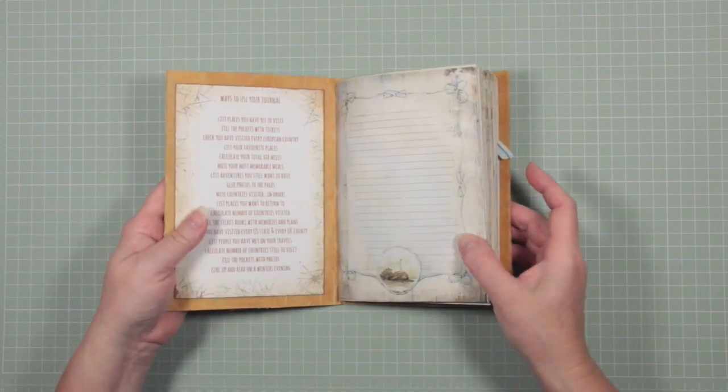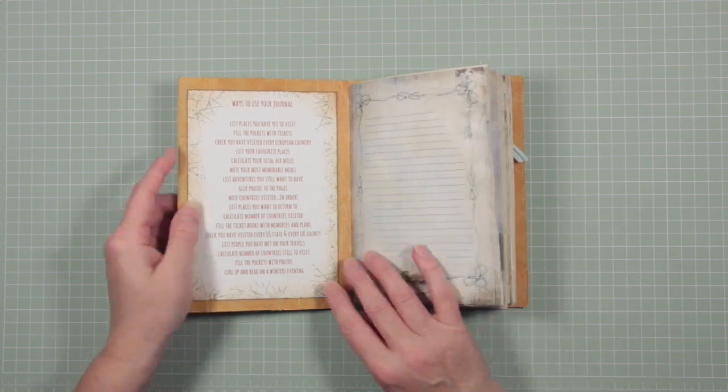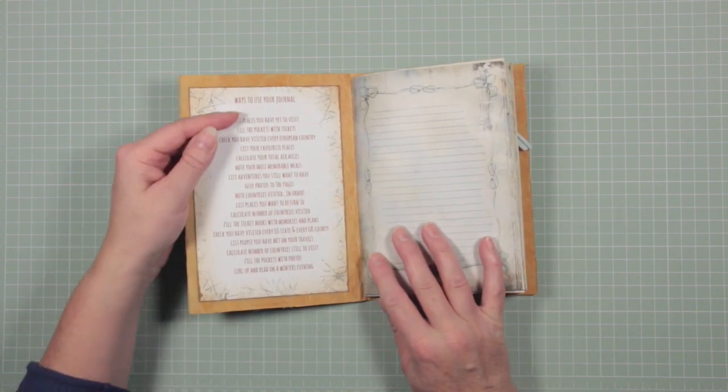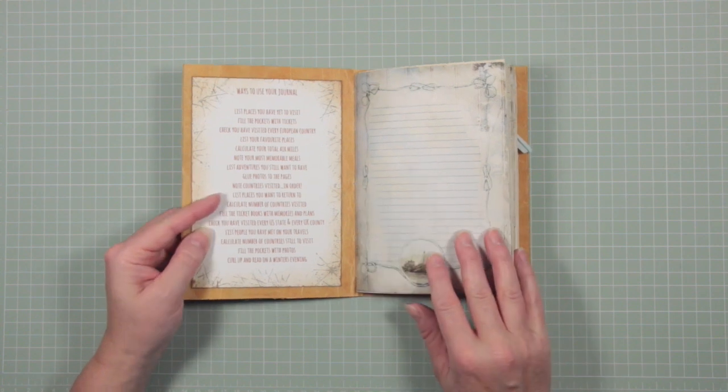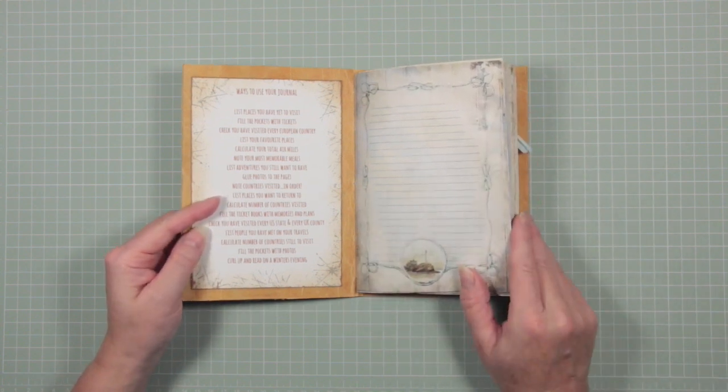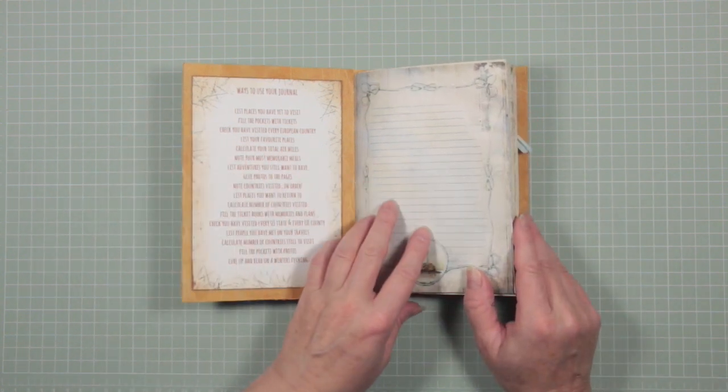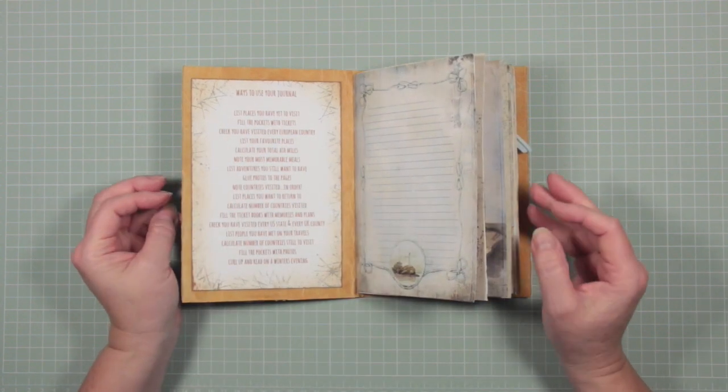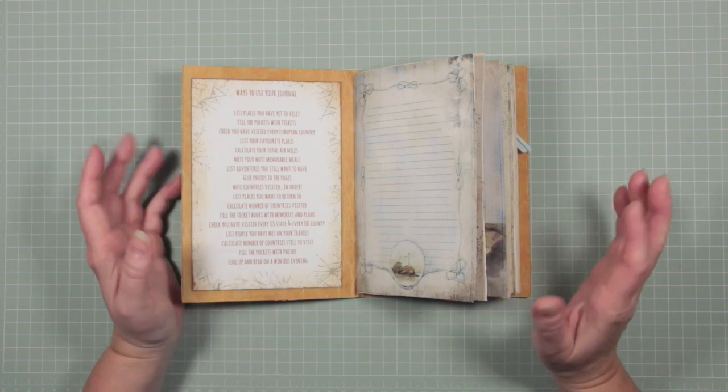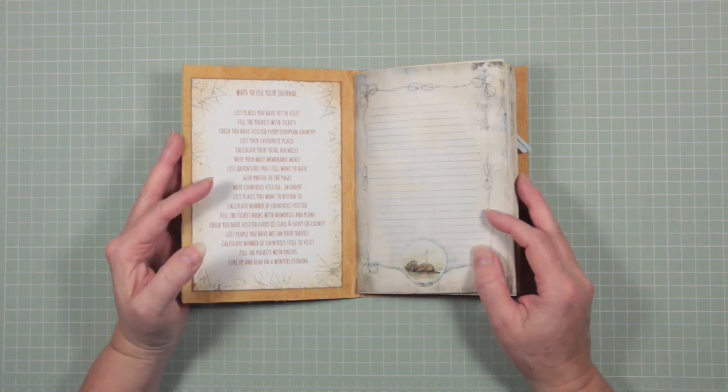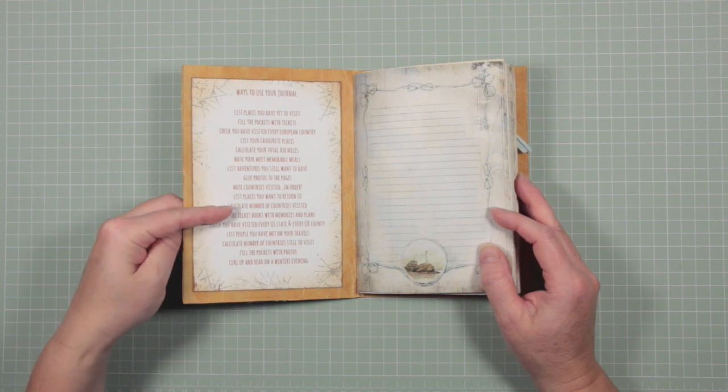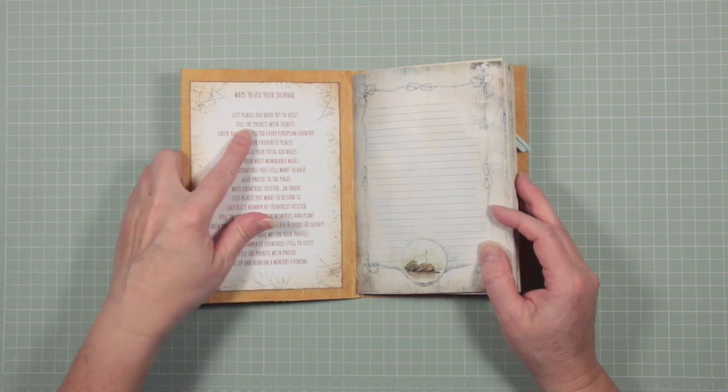You can add, as I've done in the front of this journal, ways to use your journal. So I have given suggestions for how this journal can be used that are appropriate to her interests because the whole journal has been structured around what she likes. And she loves to travel. She's been to so many places and she loves to take photographs.